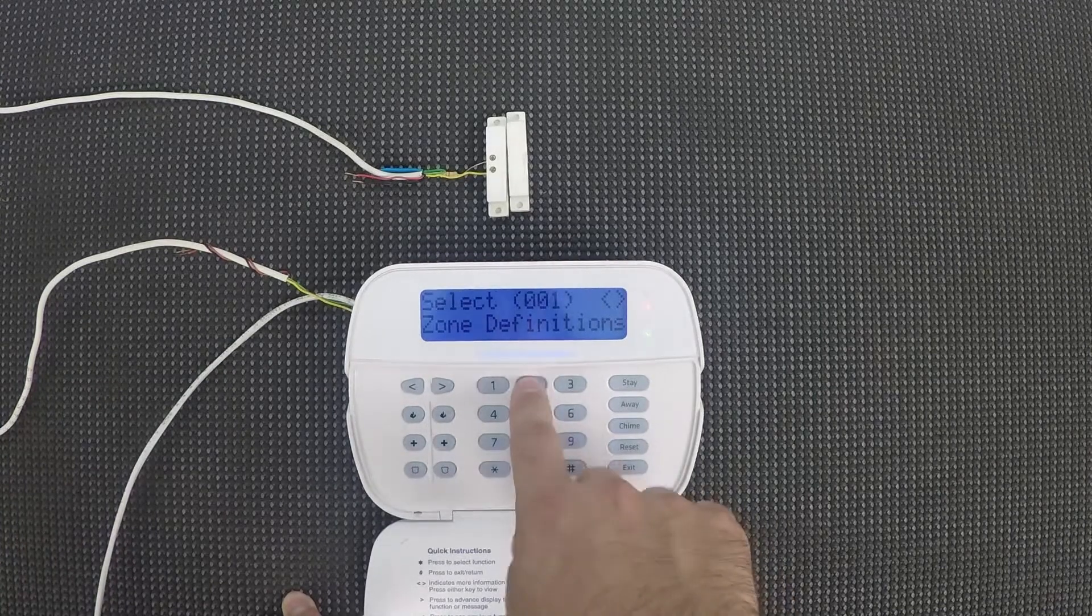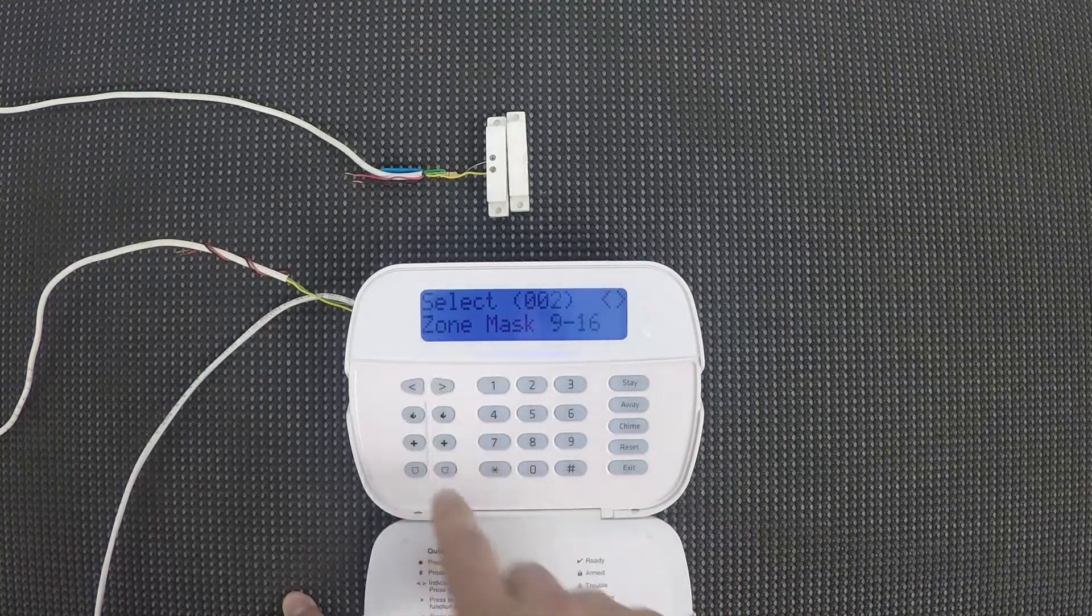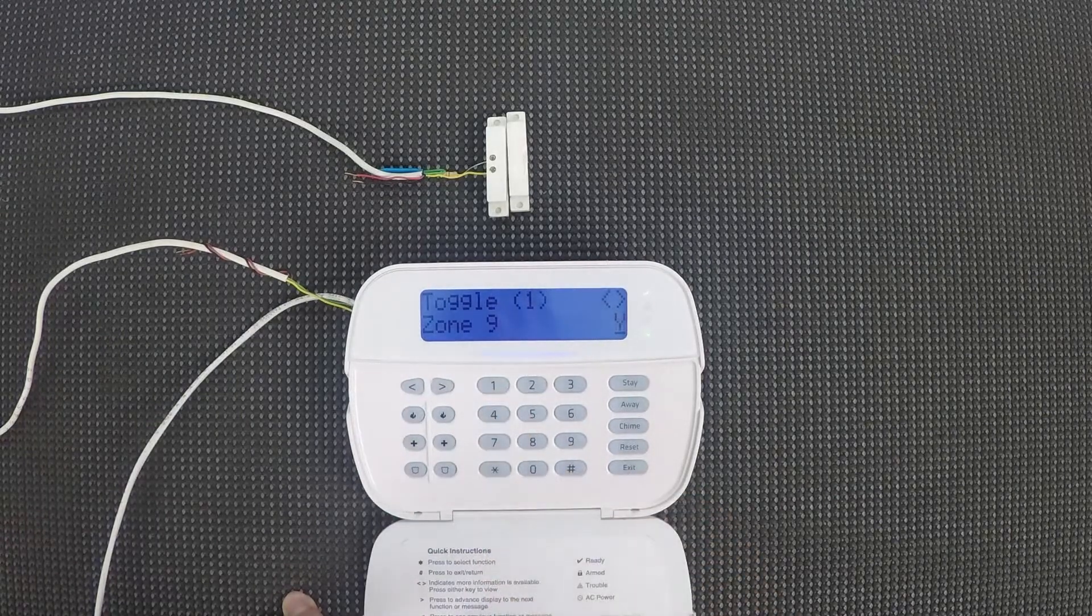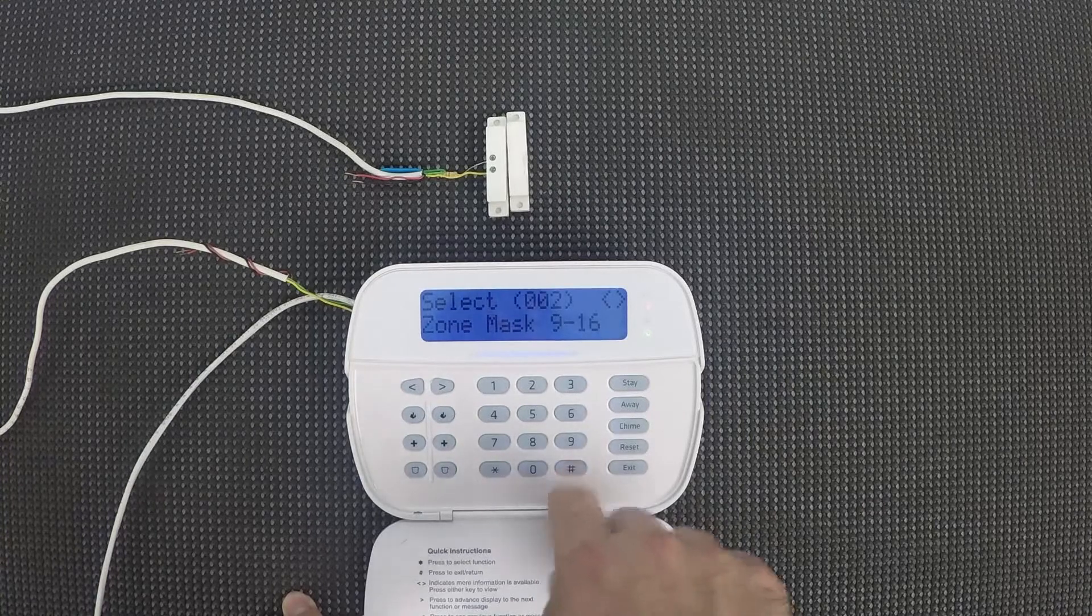Then we're gonna push pound twice, and then we're going to go to our partition one zone mask under 201. We're gonna go to zone mask nine through 16, and we're gonna turn on zone nine. Push pound a couple times.